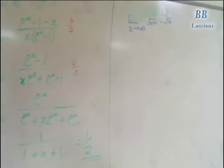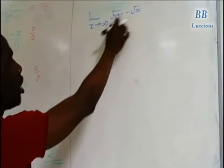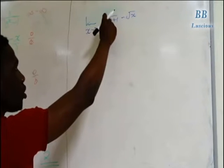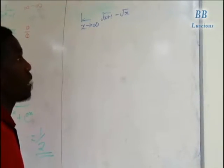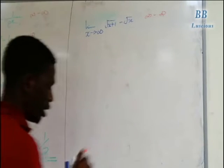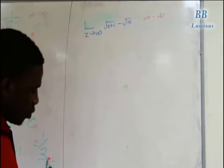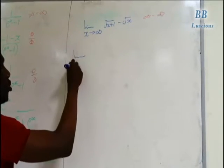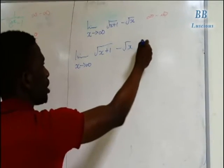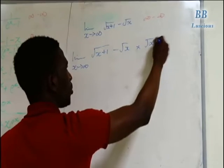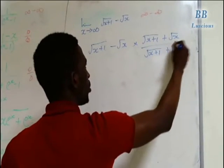Now I will solve one last, more complex example. We have limit as x tends to infinity of √(x+1) minus √x. This will definitely give you infinity minus infinity. To handle this, we rationalize by multiplying by the conjugate: multiply by (√(x+1) plus √x) over (√(x+1) plus √x).